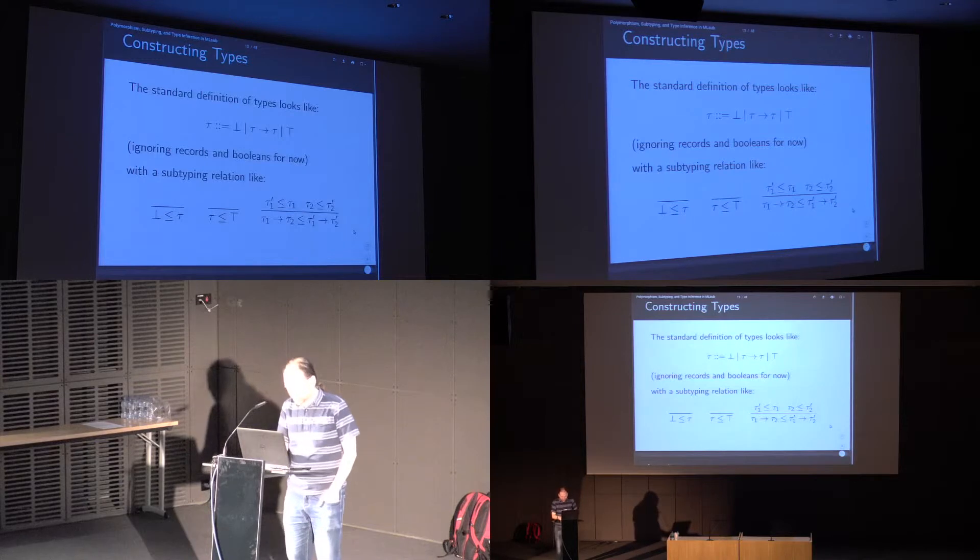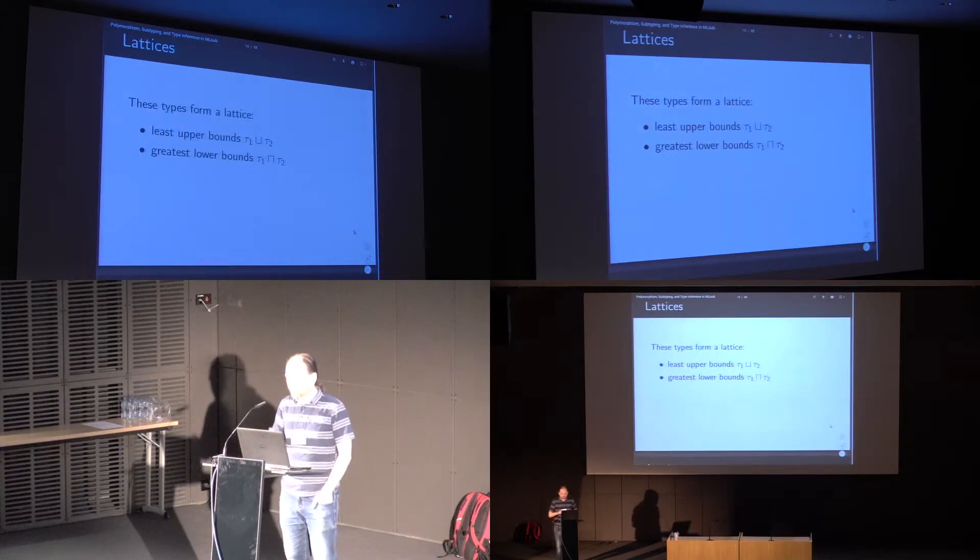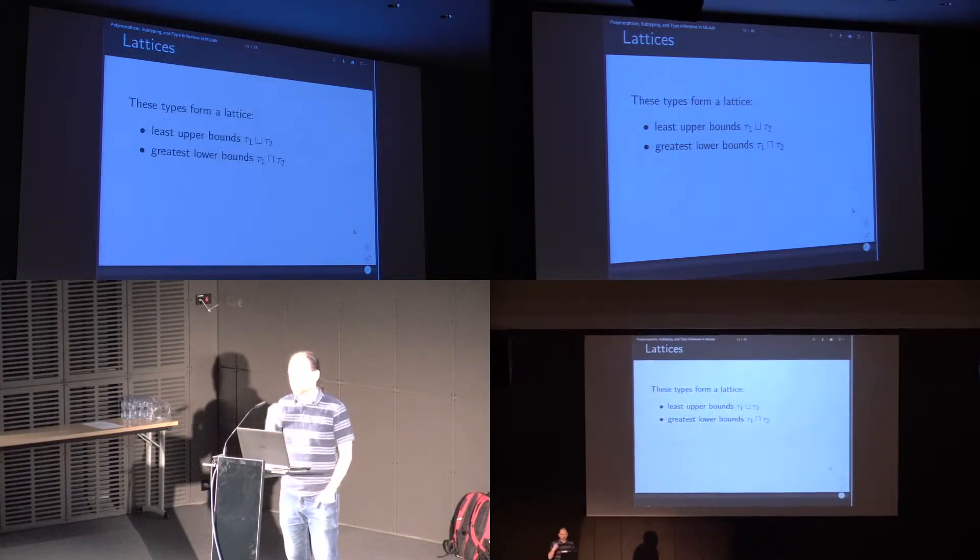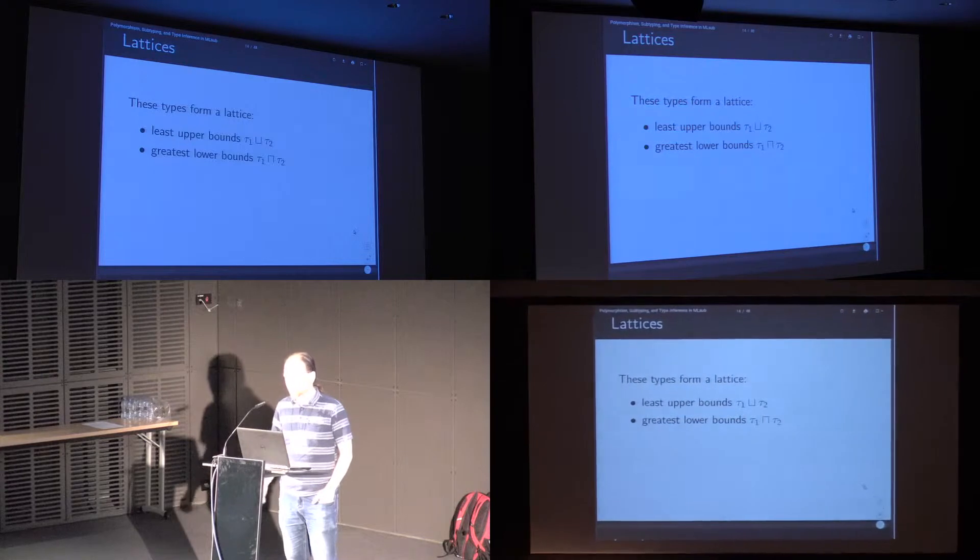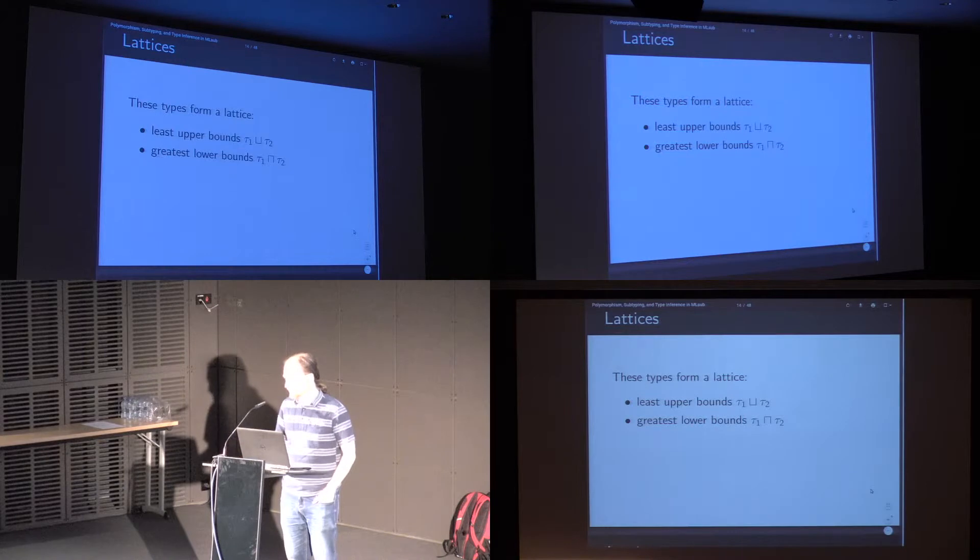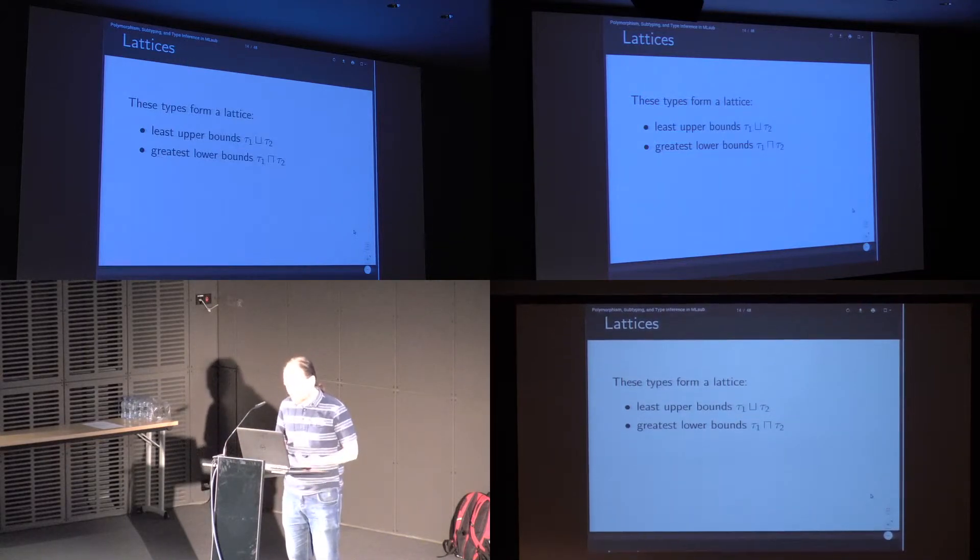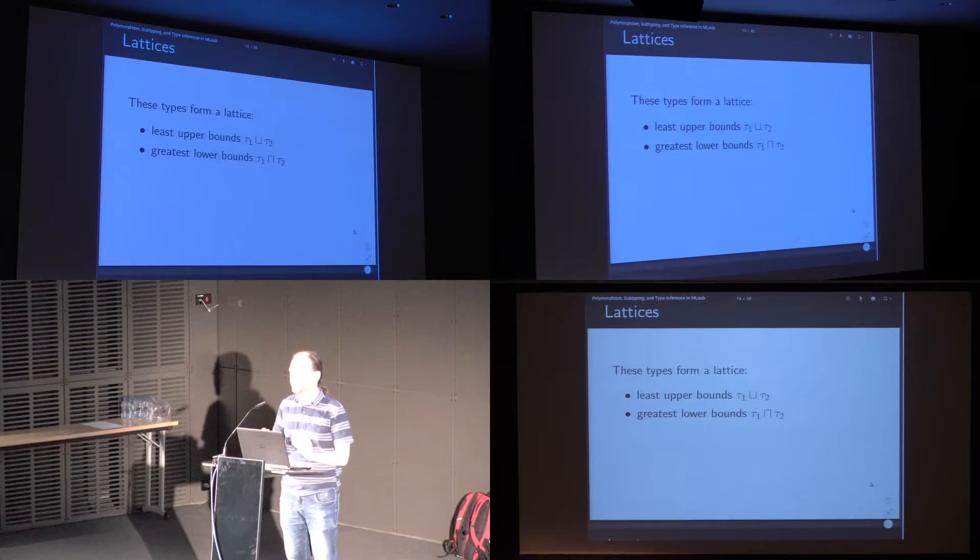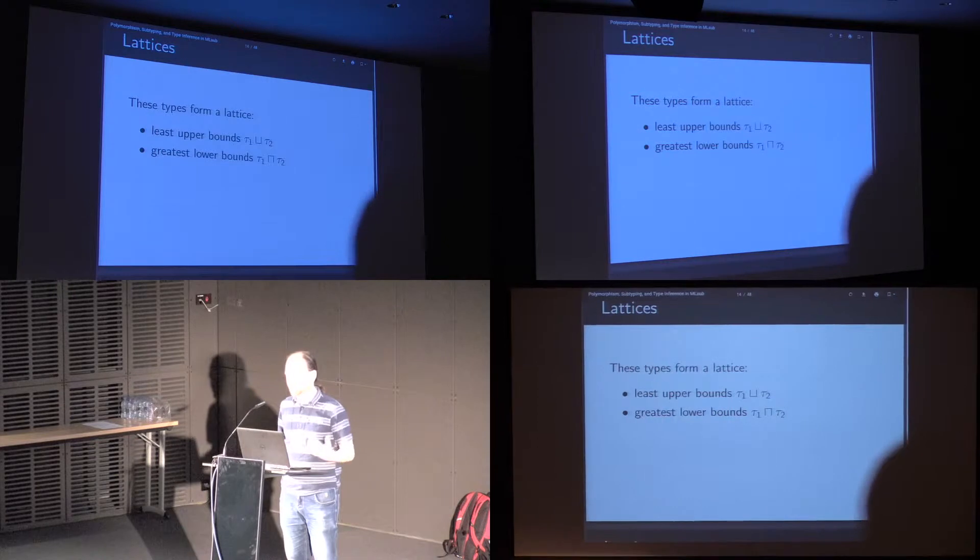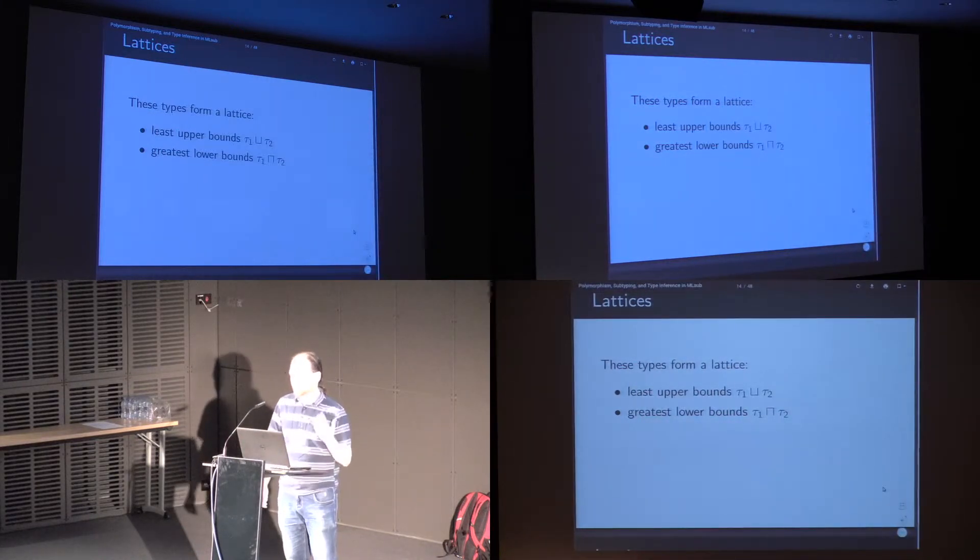Then, having defined the ground types, the usual approach is to notice that these form a lattice. That subtyping order happens to have least upper bounds and greatest lower bounds for any pair of types. And forming a lattice is incredibly useful if we're trying to do type inference, because the least upper bound describes the output of a conditional expression. If it may produce A or it may produce B, then we can say it produces their upper bound. And the greatest lower bound describes things that are used in multiple ways. If it's used as an A and as a B, then it must be provided as a lower bound of A and B.